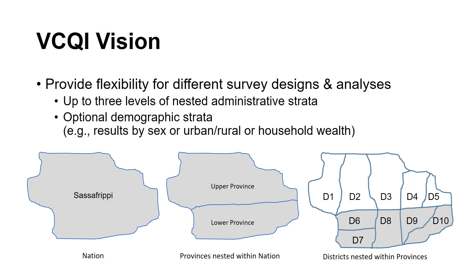Optionally, VIKI also provides flexibility to stratify results within each geographic stratum. So you can have coverage results by sex, by urban versus rural, by household wealth quintile, or other demographic strata. VIKI is flexible concerning both the geographic and demographic strata of the survey design.